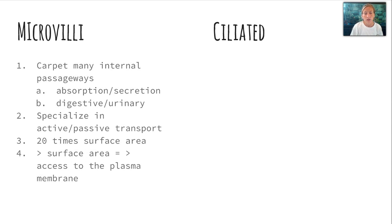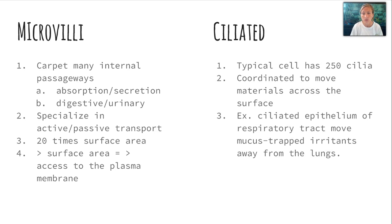Epithelial cells can have specialized structures known as microvilli or cilia. Microvilli are kind of like a carpet and provide many internal passageways, which increases absorption and secretion. You normally find them in the digestive and urinary systems, and they specialize in active and passive transport. Because they provide 20 times the surface area, they give more access to the plasma membrane, making them a more effective way to pass and remove materials from a cell. Cilia work a little differently — a typical cell has about 250 cilia. They are coordinated to move materials across the surface. A good example is the ciliated epithelium of the respiratory tract, which can move mucus-trapped irritants away from the lungs and expel them outside the body through the trachea and esophagus.